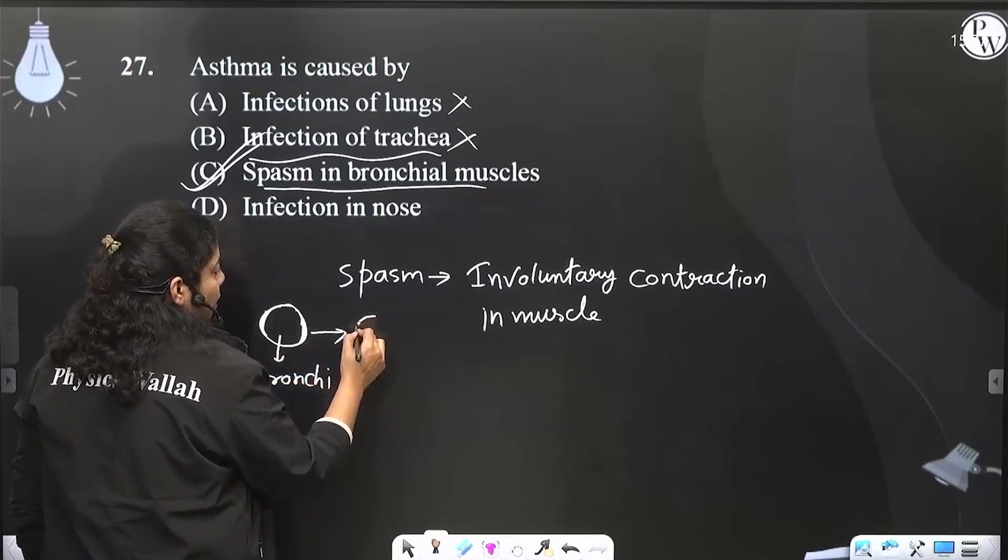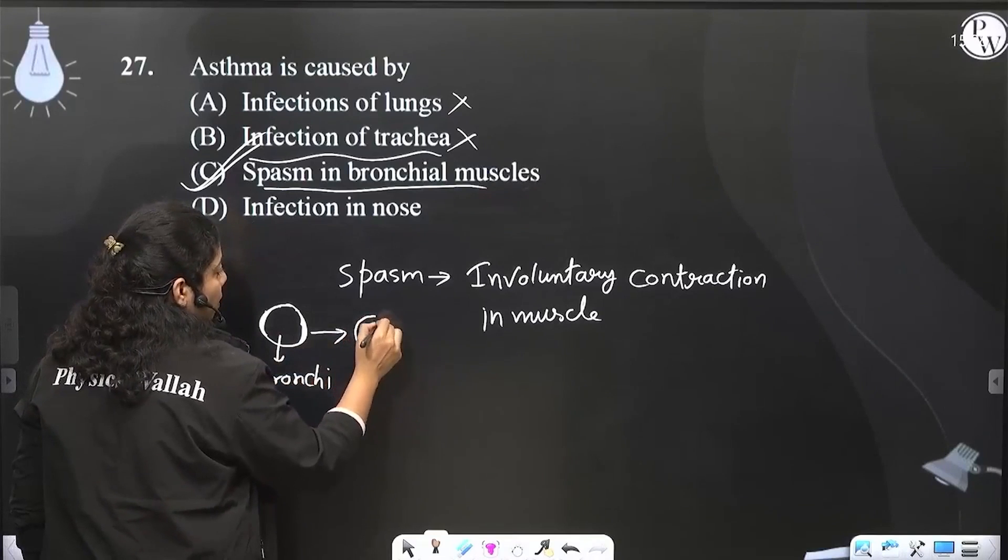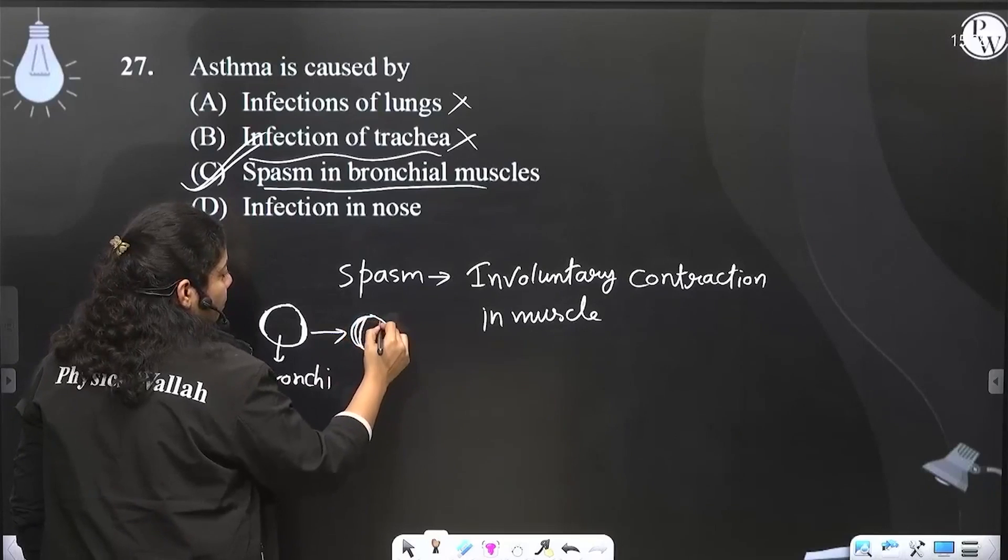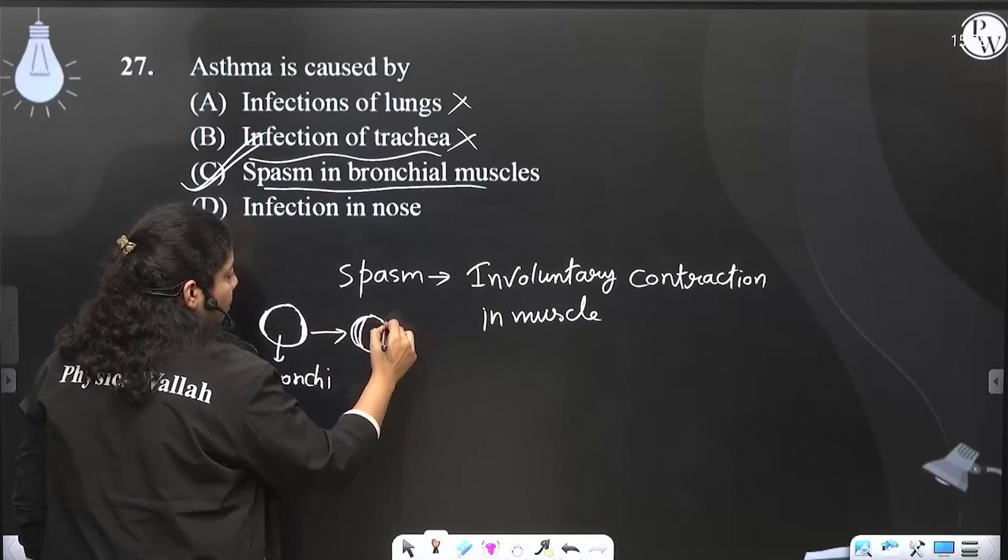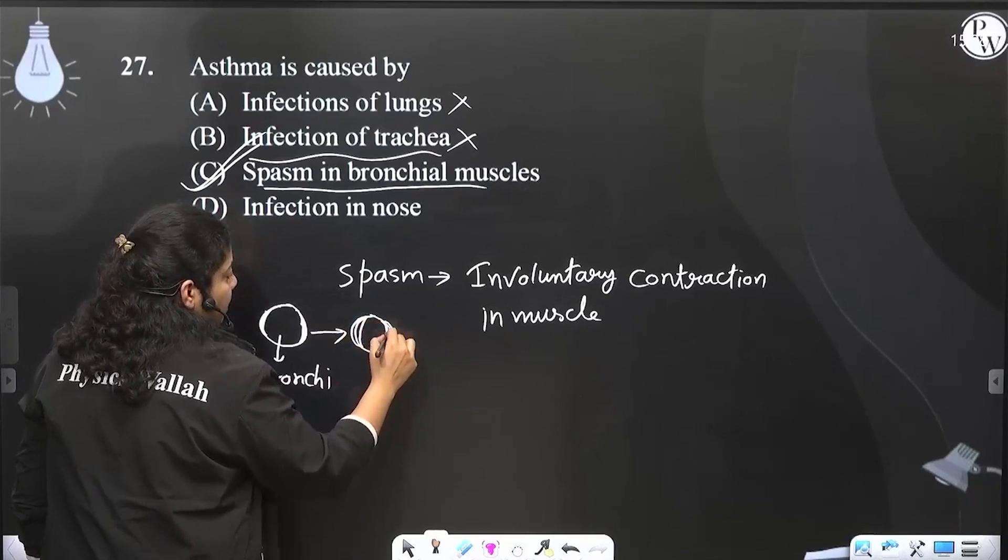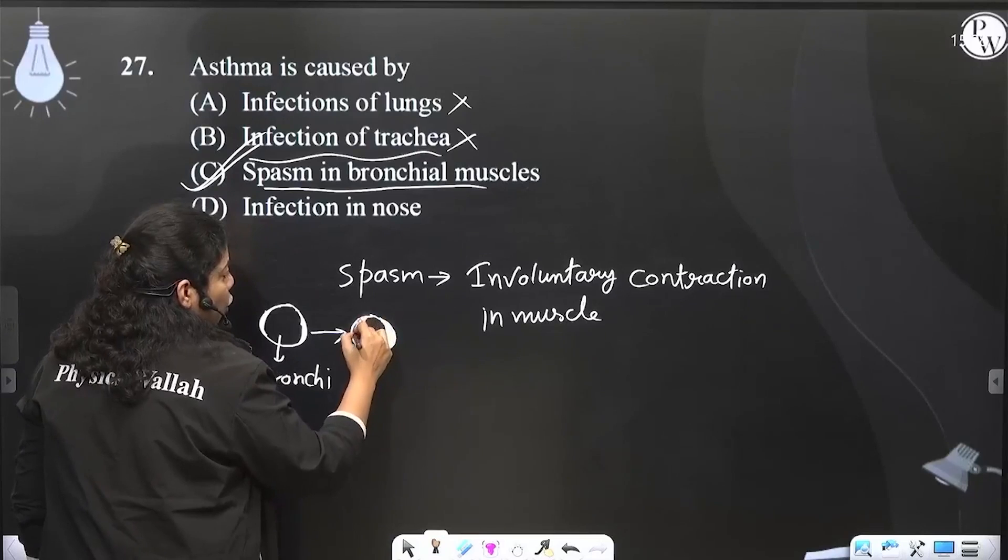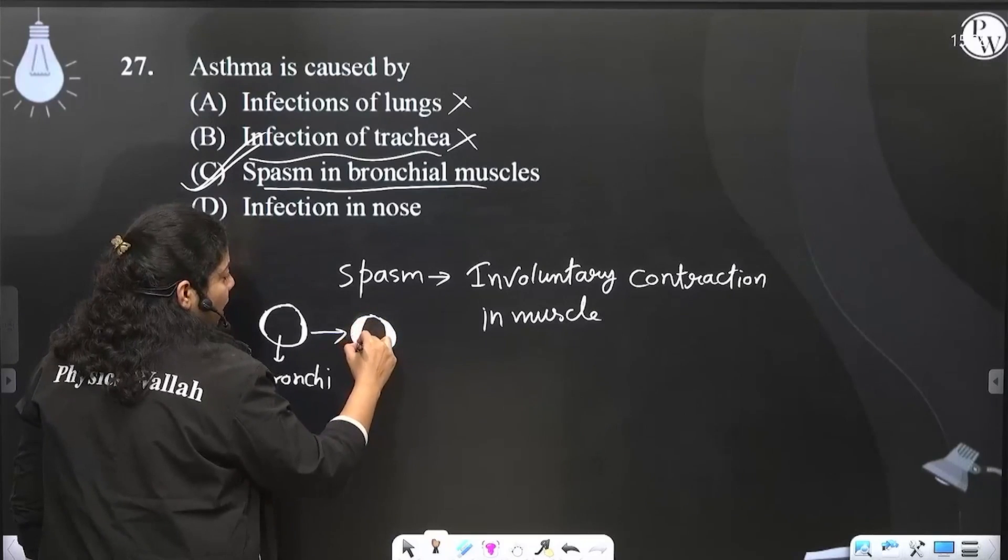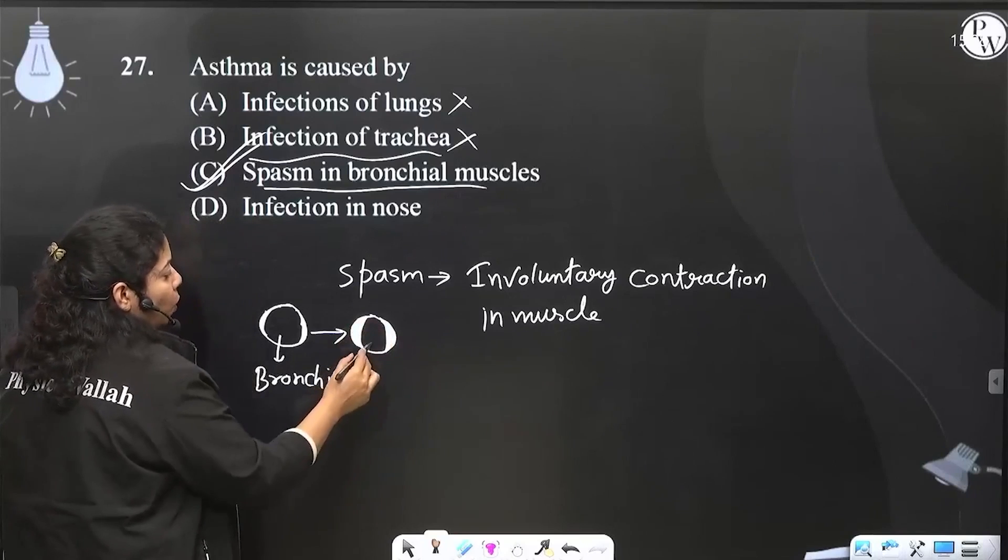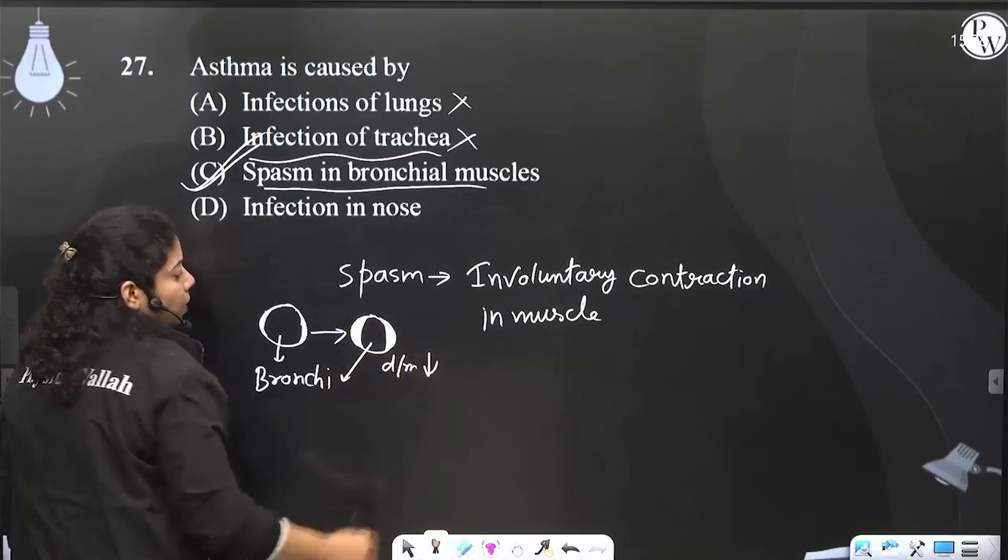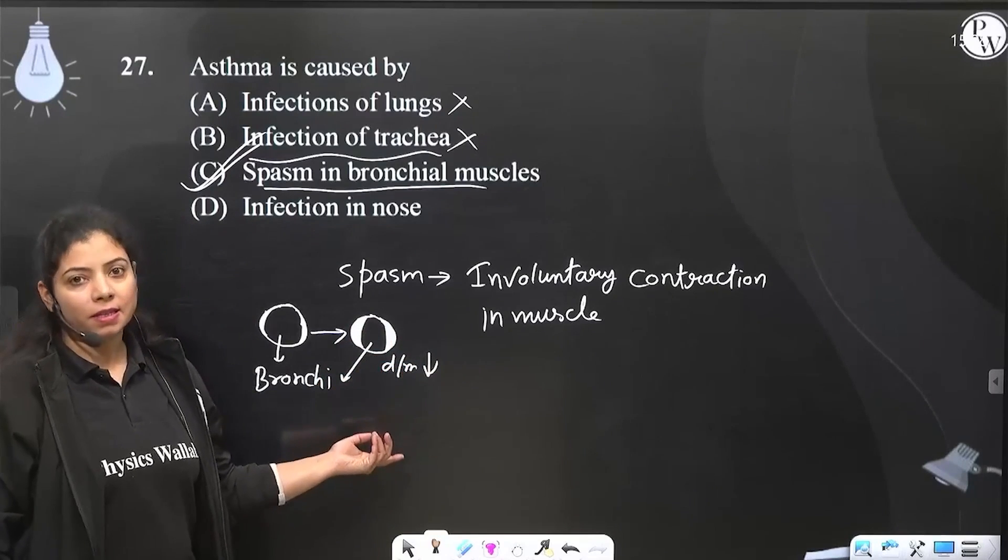What is muscle spasm? When there's spasm, the bronchi diameter is reduced, the bronchi diameter becomes lower. Now you can see the diameter is reduced. This is asthma.